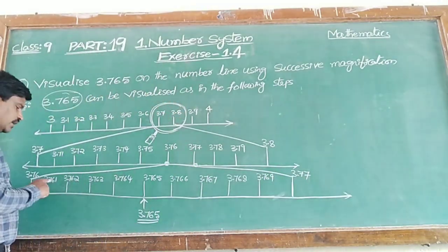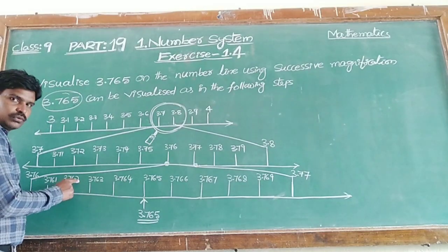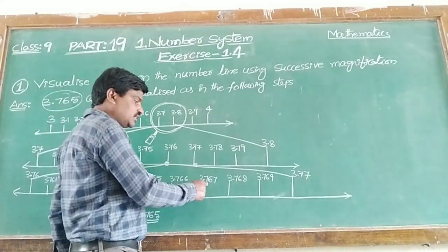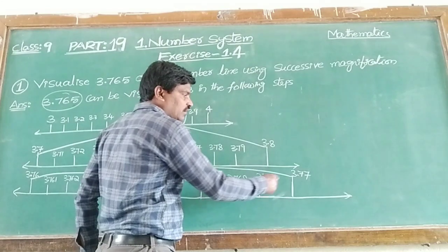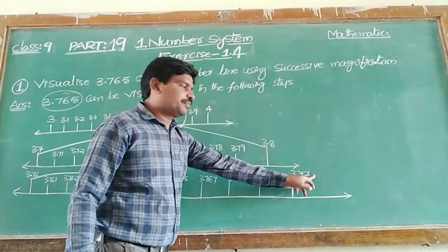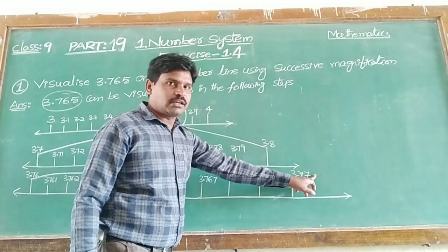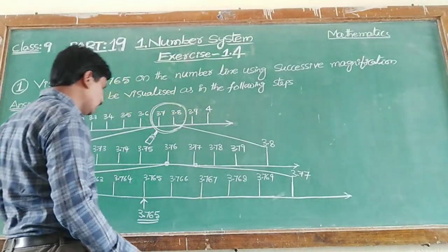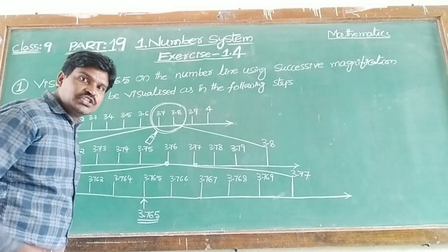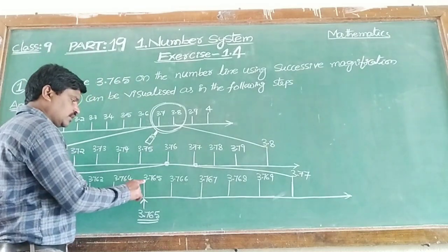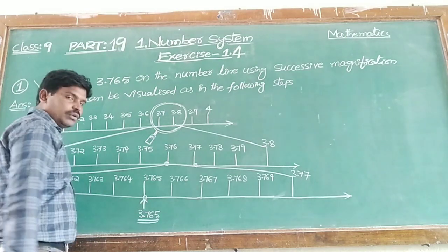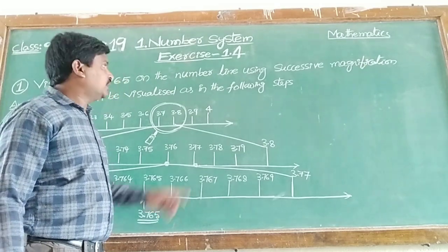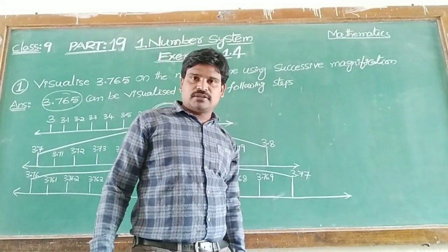Now we need 3.765, which lies between 3.76 and 3.77. Between 3.76 and 3.77, we make 10 equal portions: 3.761, 3.762, 3.763, 3.764, 3.765, 3.766, 3.767, 3.768, 3.769, and 3.77. So 3.765 is located here on the number line. This is how we find the location of 3.765 using successive magnification.